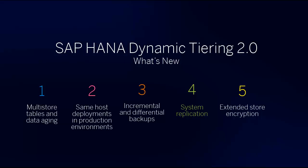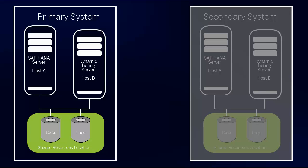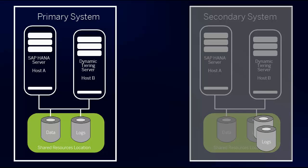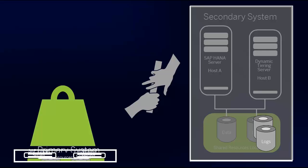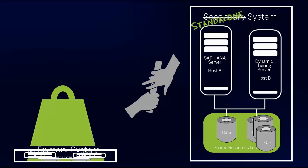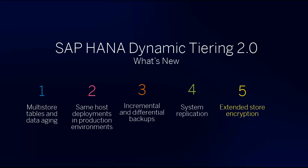Dynamic Tiering now supports system replication to protect your production system against unexpected downtime due to disasters. It uses two-tier synchronous replication in the form of a primary and secondary, or shadow, system. The primary system sends redo log buffers to the secondary system where they are saved and replayed to build a shadow database. The secondary system is passive until the primary system becomes unavailable and you perform a takeover, at which point the secondary system becomes a standalone server using the data from the redo log buffers.